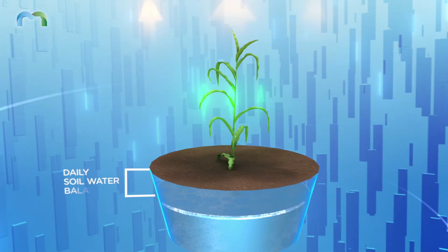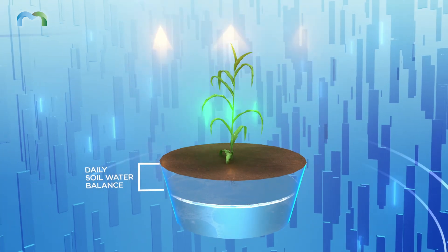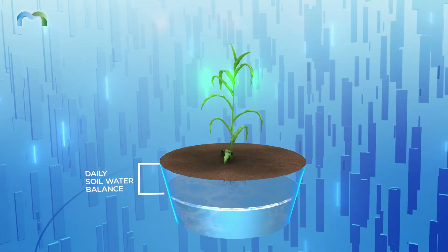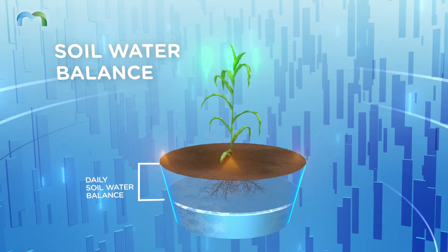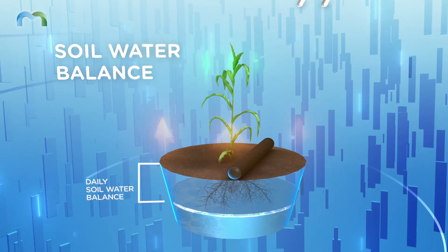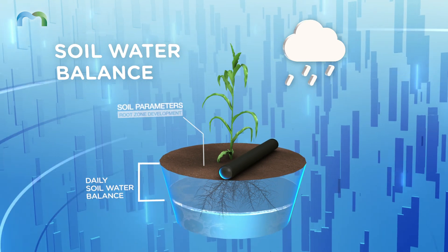Now that we know how much water the crop extracts from the soil – plant water demand – we can calculate the current soil water balance. To this end, MANA's model factors in effective rain and applied irrigation, as well as soil parameters and root zone development.